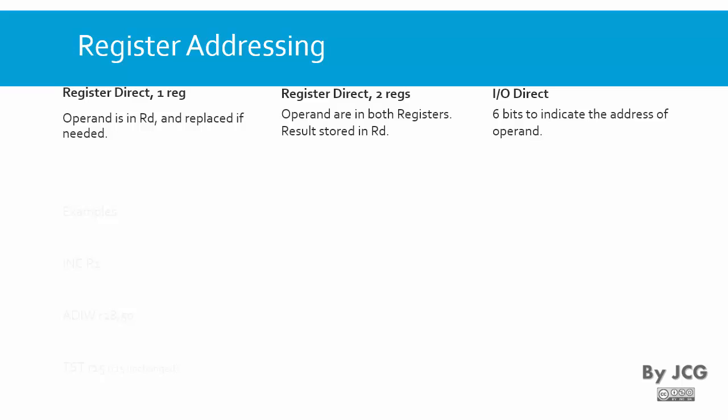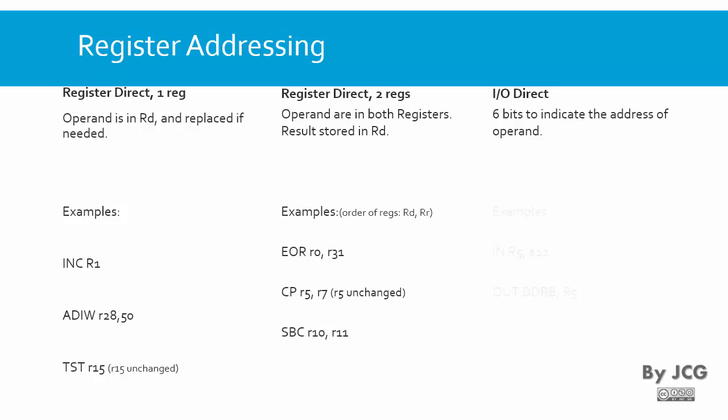Now let's see some examples. For instance, we have instructions like increment register 1, test register 15. When we have two registers we have instructions like EOR — EOR stands for exclusive OR — where we are accessing two registers. For the input/output register we have the mnemonics IN and OUT, and with these two mnemonics we can access any of the 64 input/output registers.